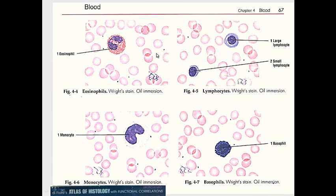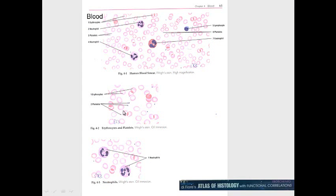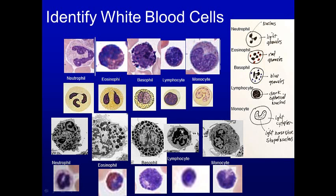Looking at blood cells, we see individual white blood cells - don't confuse them with cells in the surrounding tissue. We see eosinophils, monocytes, basophils, and neutrophils. The point here is to observe different colors and staining characteristics. The neutrophil, eosinophil, and basophil all have a lobulated nucleus; neutrophil granules are small, eosinophil granules are larger and red, and basophil granules are large and blue. The lymphocyte is the smallest, and the horseshoe-shaped cell is the monocyte.